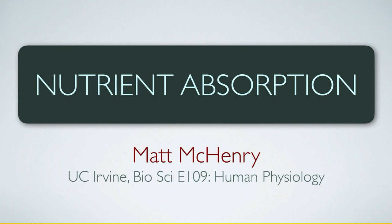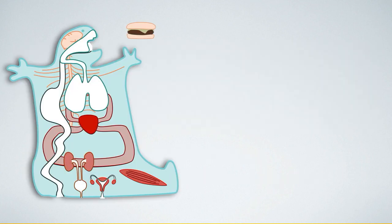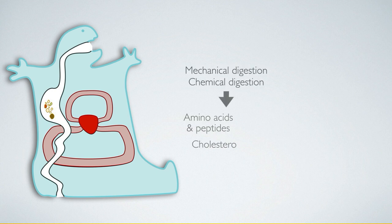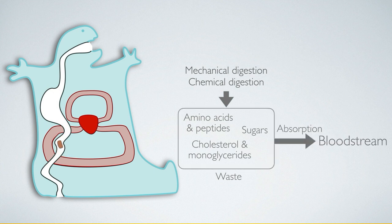We continue with the digestive system, focused on the fate of the cheeseburger discussed in the last lecture. We left off with the cheeseburger having been broken down — all mechanical digestion is completed by the time food emerges from the stomach. What remains is further chemical digestion, absorption of nutrients into the bloodstream, and finally removal of waste products through defecation. The key question is: how are these nutrients absorbed?